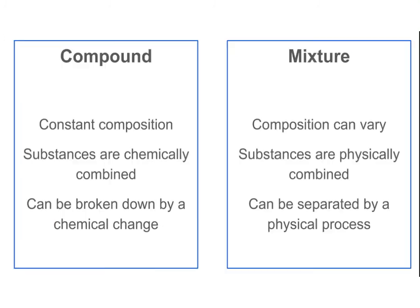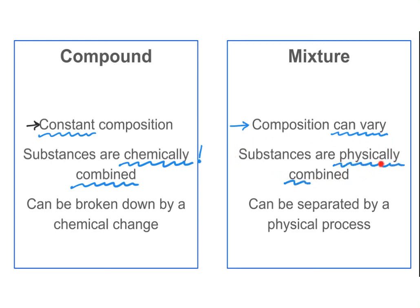Since compounds and mixtures are frequently confused, let's review the main differences. For compounds, composition is constant — the ratio between the components remains the same and cannot be changed without a chemical reaction. In a mixture, the composition can be altered very easily — we can add more salt to salty water and make it saltier, changing the ratio of components. In compounds, substances are chemically combined through chemical bonds, whereas in a mixture it was just a physical combination — things were put in the same container and mixed.